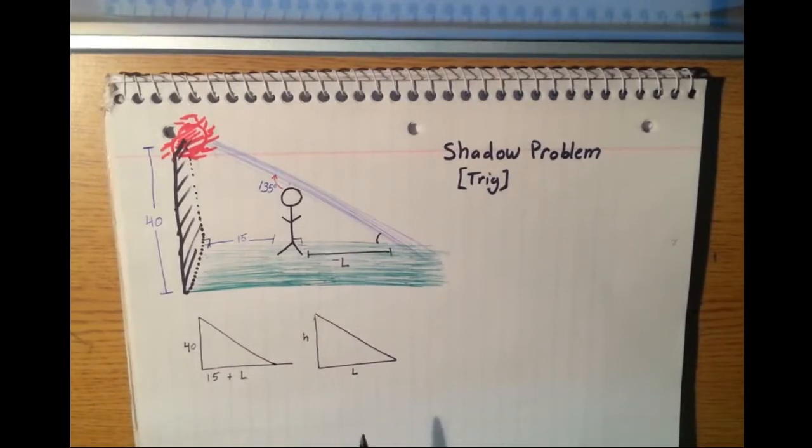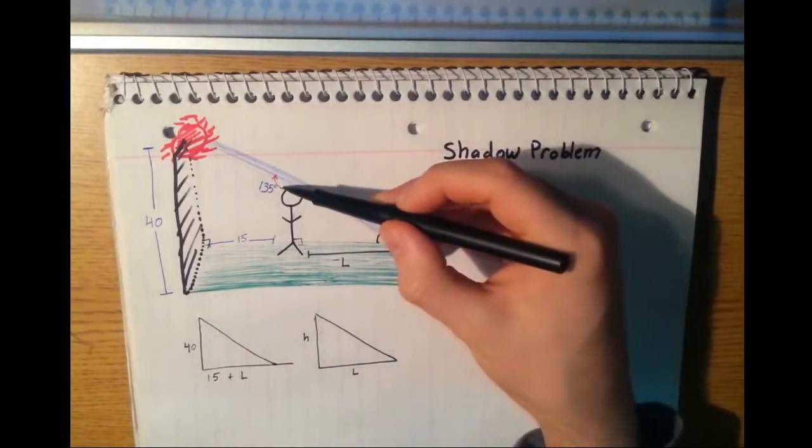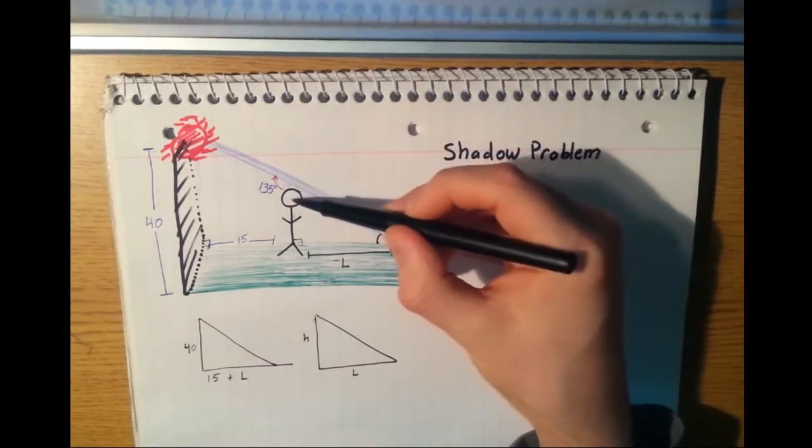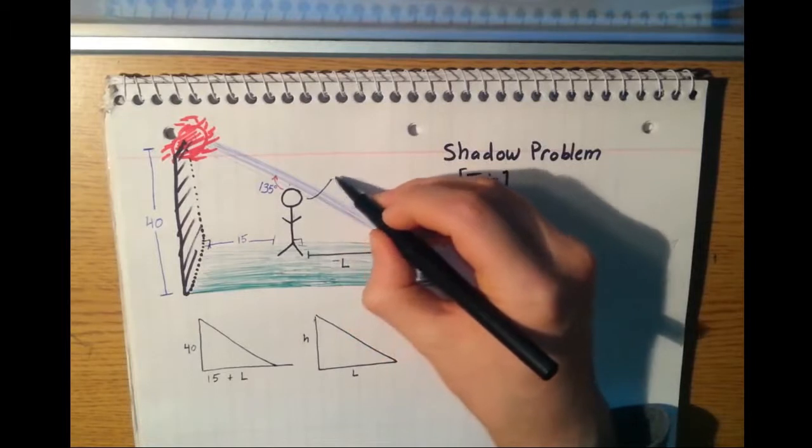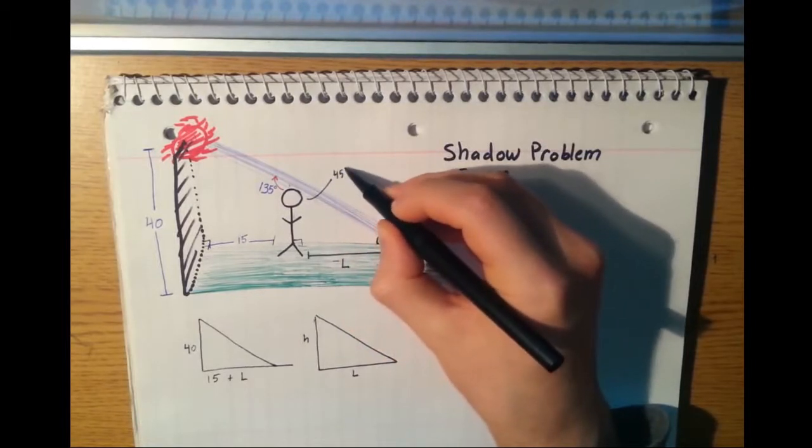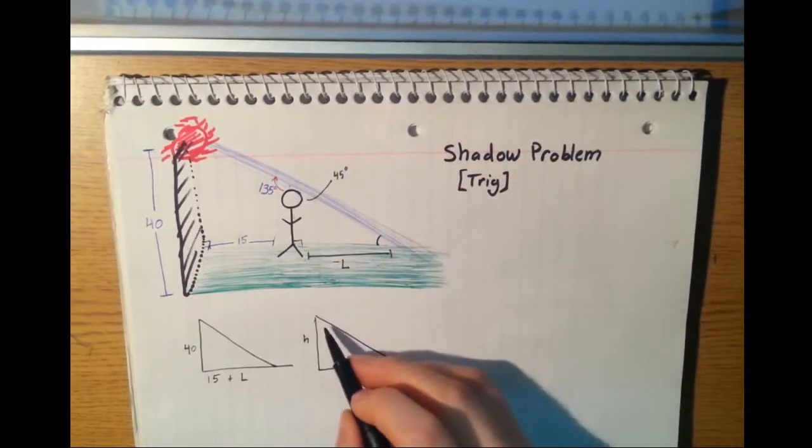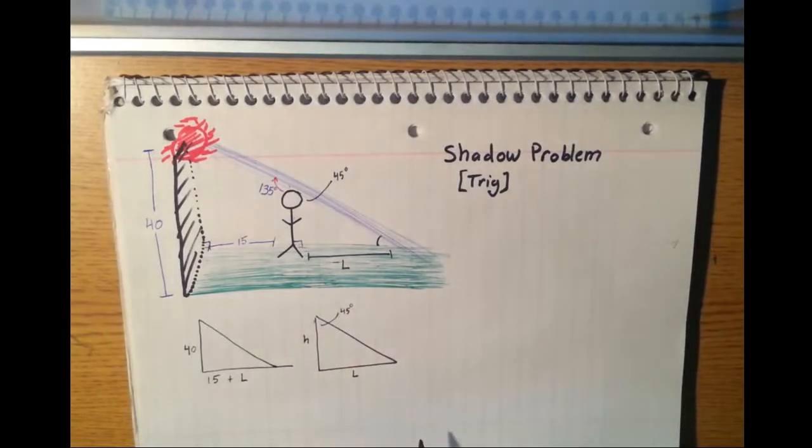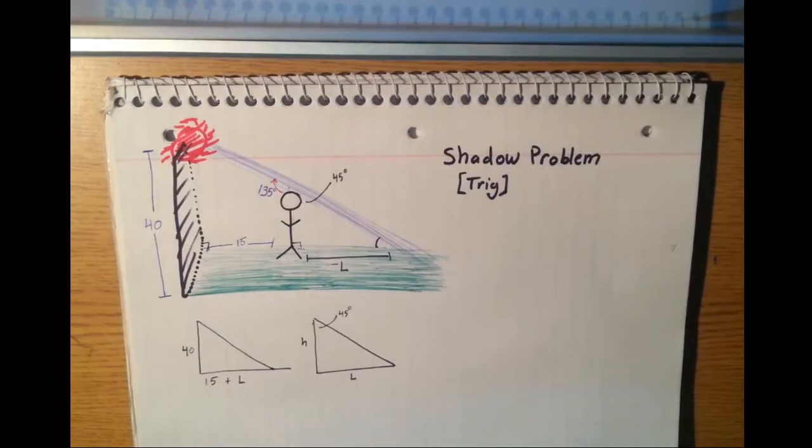Now, we do know something. We know that this angle right here is 135 degrees. So since this entire thing has to add up to 180, I know that this right here has to be 45 degrees. So I'm going to put 45 degrees right here. Now, let's start doing some similar triangle stuff.